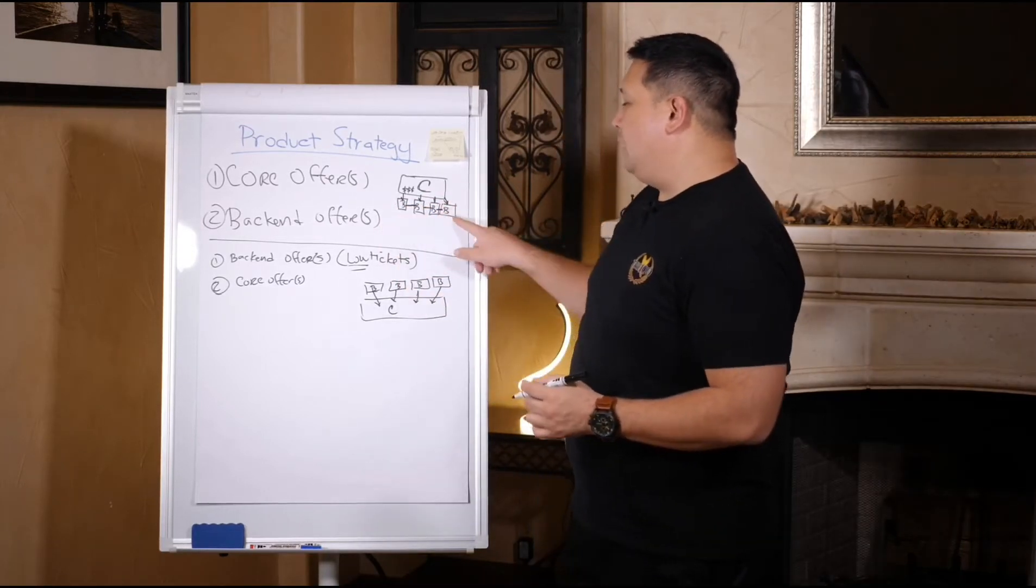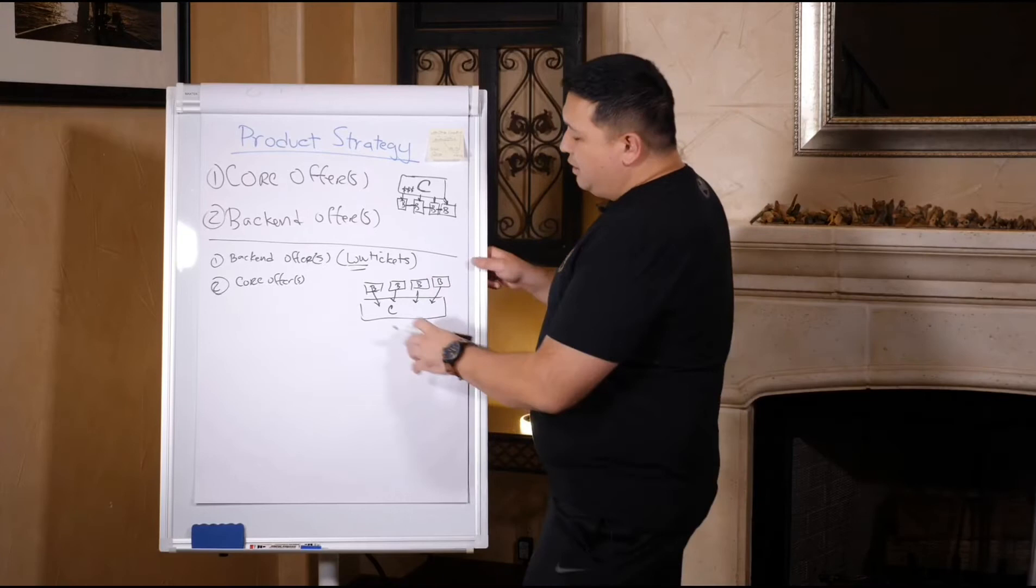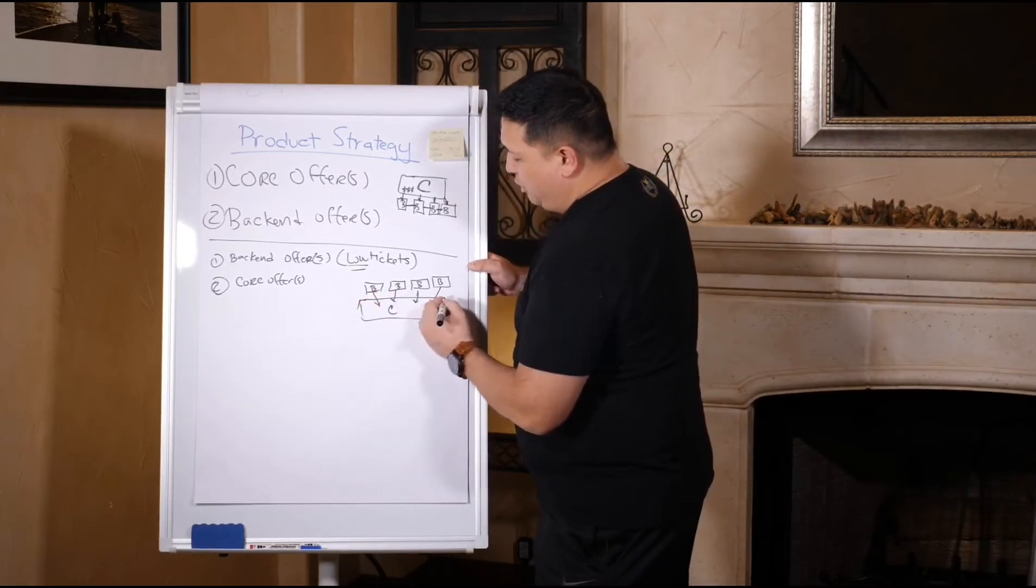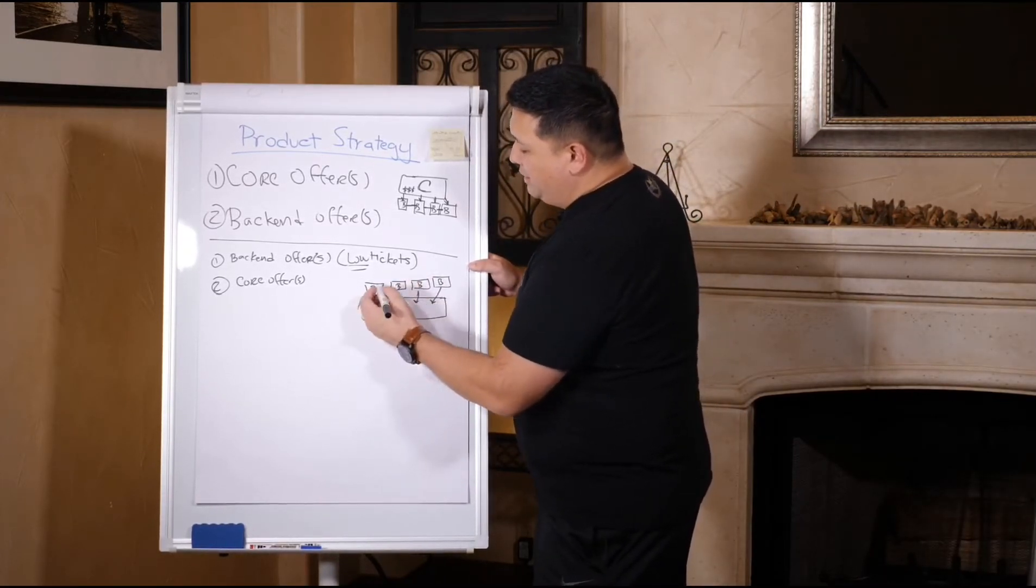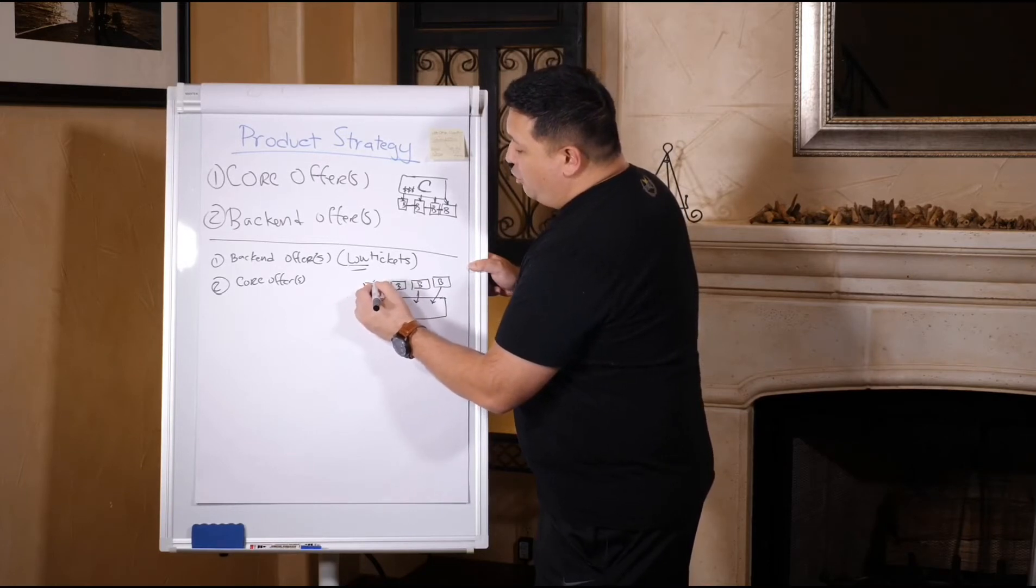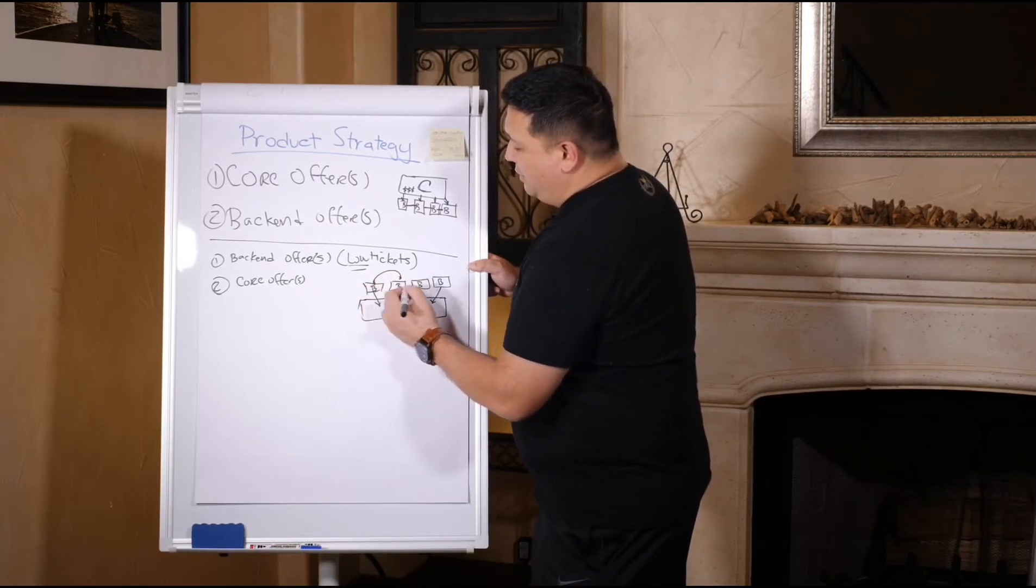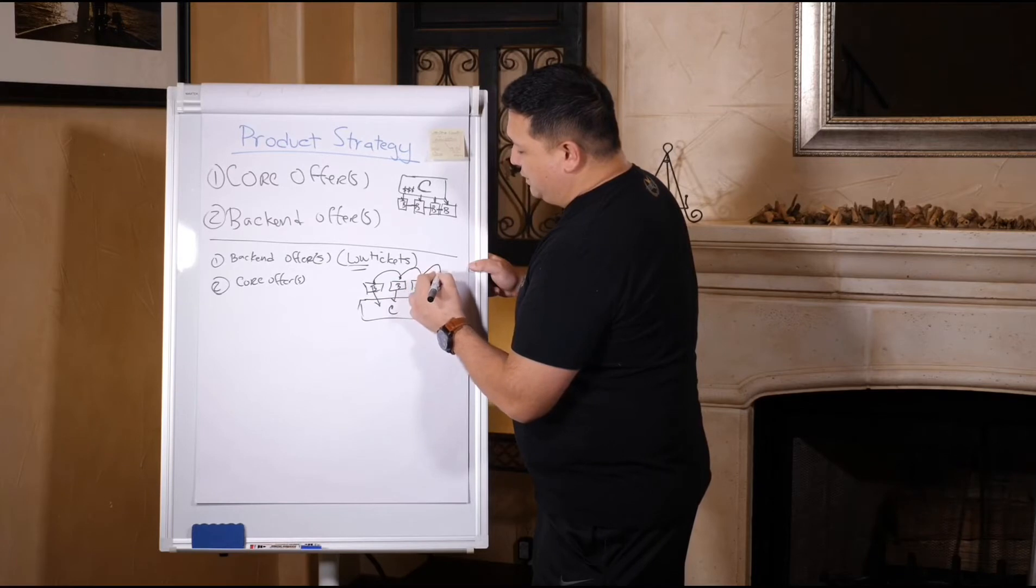This is upsell and cross-sell. This right here is really upsell, mostly all upsell. They buy this and you want to upsell. Typically, if they don't buy this, then you want to try to sell them something else, then try to sell them something else, and try to sell them something else.